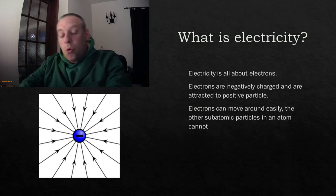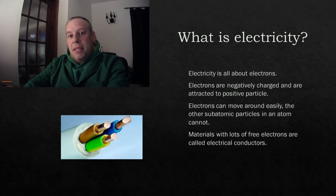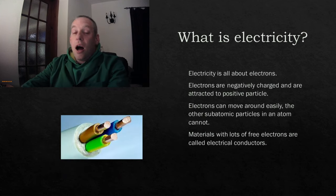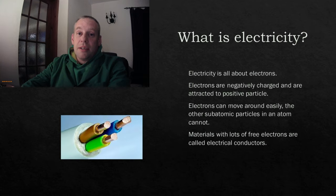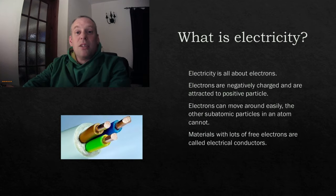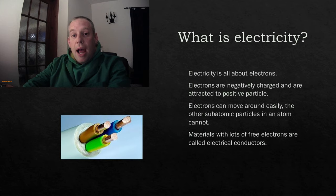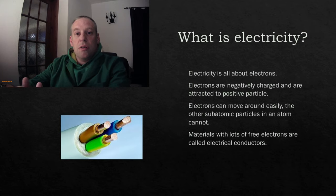When we look at materials, the ones that have got lots of free electrons are the ones that are good conductors — metals like copper, and some non-metals like graphite, which is carbon, can also conduct electricity. They've got lots of electrons spare, so they've got lots of these little particles that can pass electricity on.